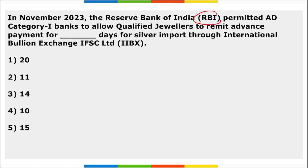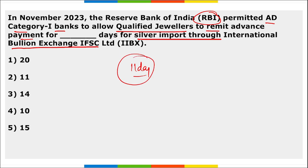Next: RBI permitted AD Category 1 banks to allow qualified jewelers to remit advance payment for silver imports through International Bullion Exchange IFSC Limited. How many days of advance payment is allowed? 11 days of advance payment for silver import through International Bullion Exchange Limited. The right option is 11 days.